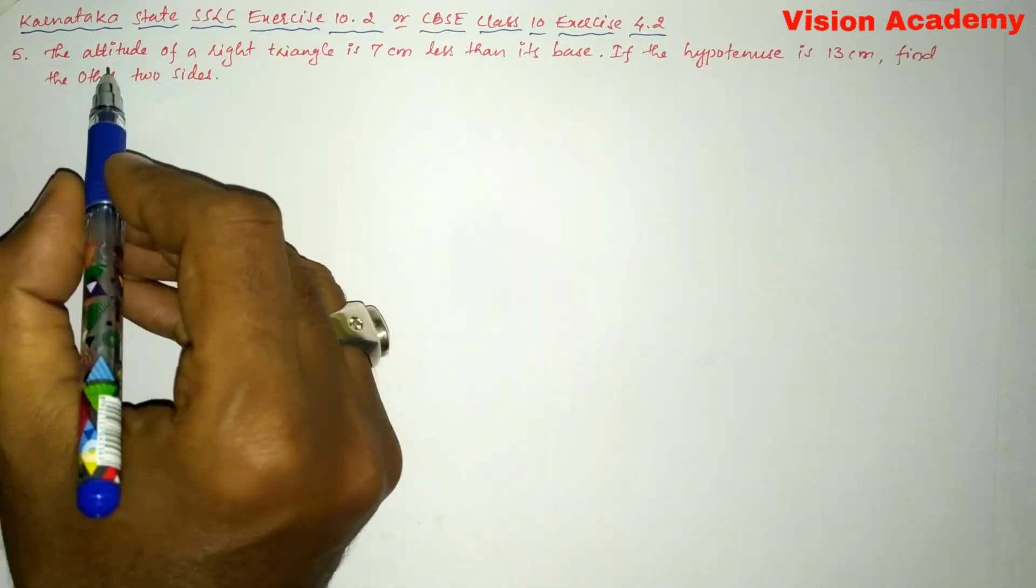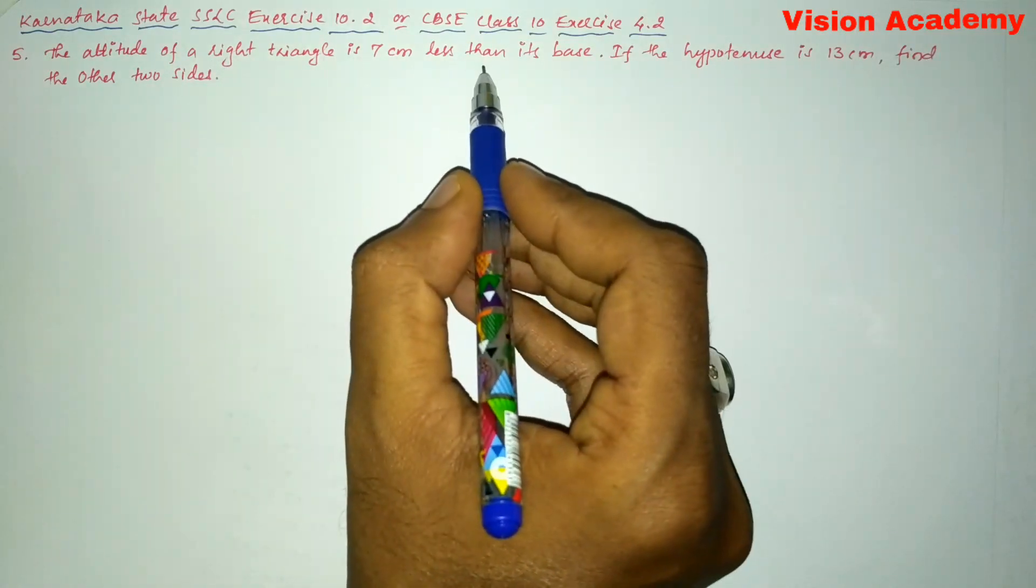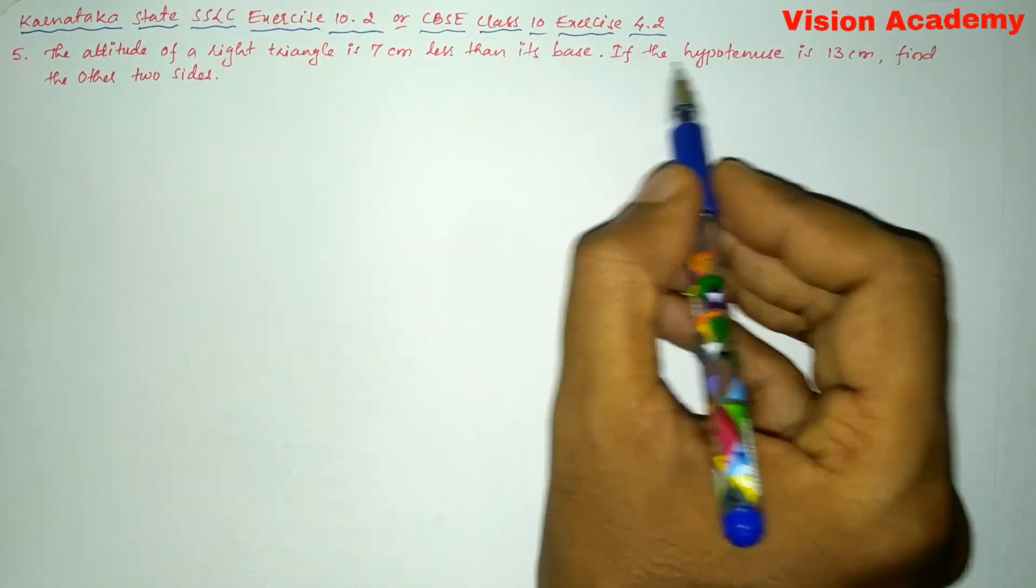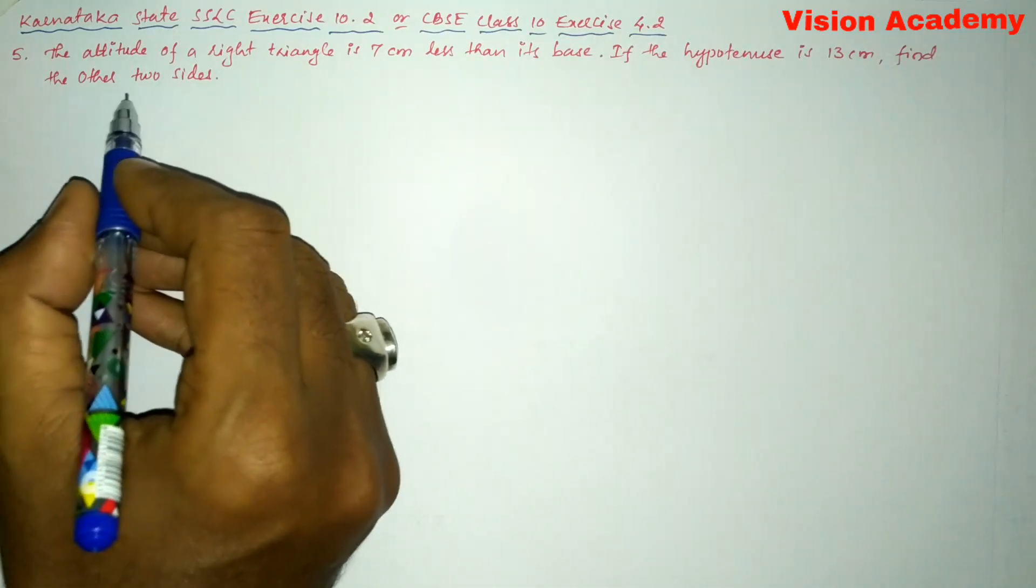Question number 5. The altitude of a right triangle is 7 cm less than its base. If the hypotenuse is 13 cm, find the other two sides.